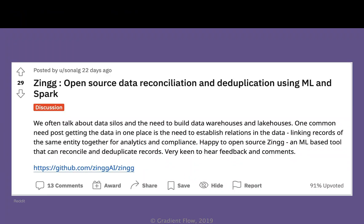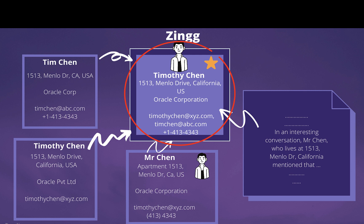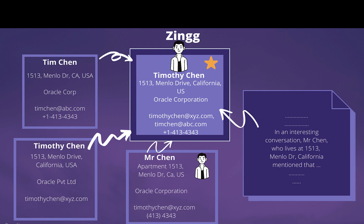A new open-source library called Zing is useful for large-scale entity resolution. Analytics engineers and data scientists can use Zing to quickly integrate data silos and build unified views at scale. Zing integrates different records of an entity like customer, patient, supplier, or product in the same or disparate data sources. It is useful for building unified and trusted views of customers and suppliers across multiple systems.